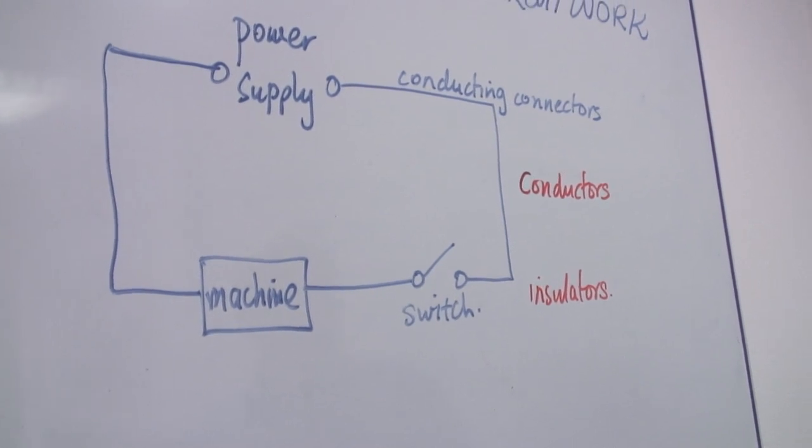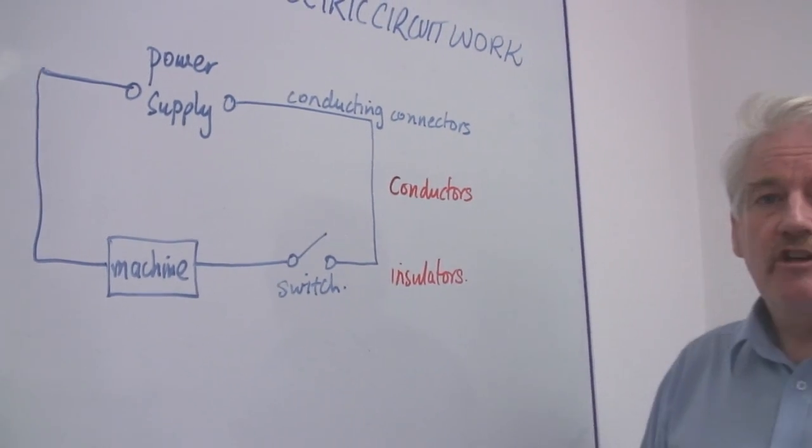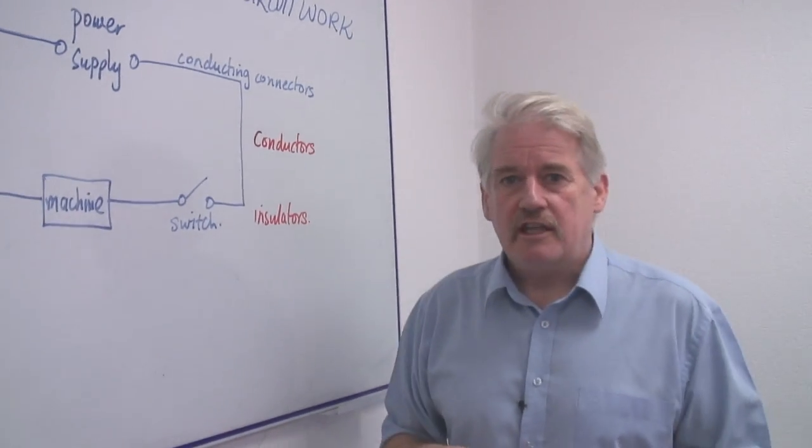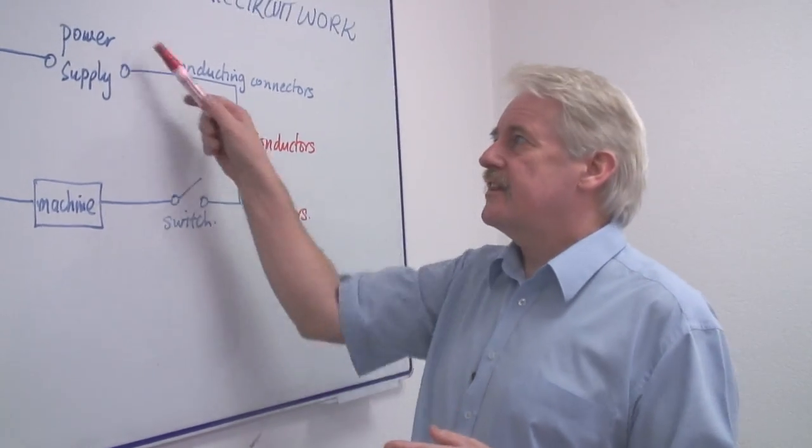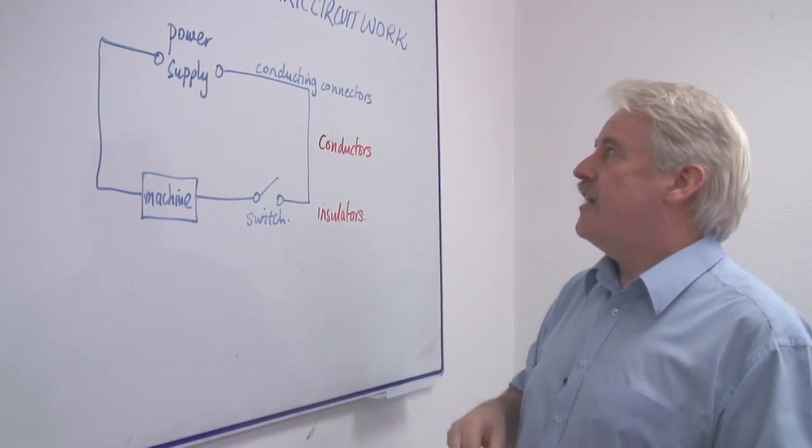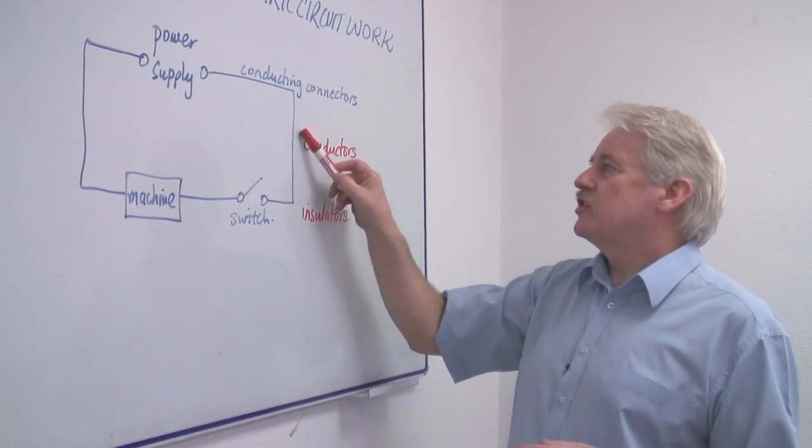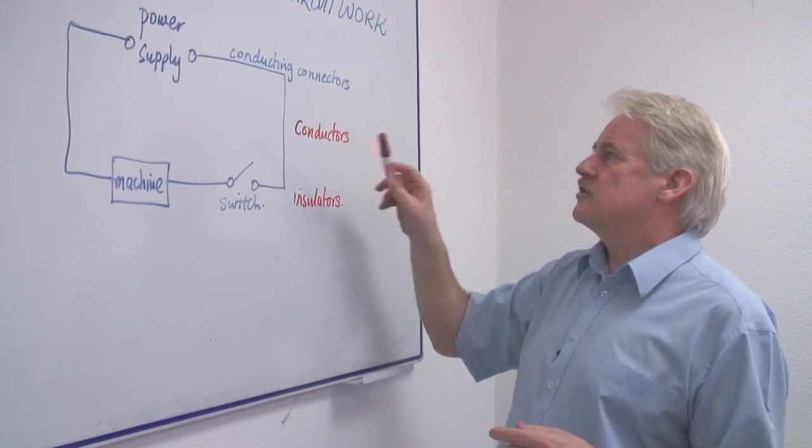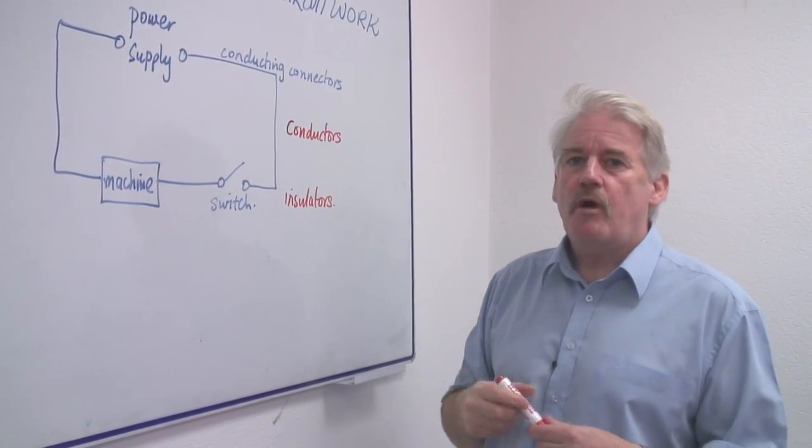A conductor is something which allows electric current to pass through it. So an electric circuit works by connecting things together so that the electricity can pass through it. And therefore, we must have conducting materials, conductors, to take the current from one place to another.